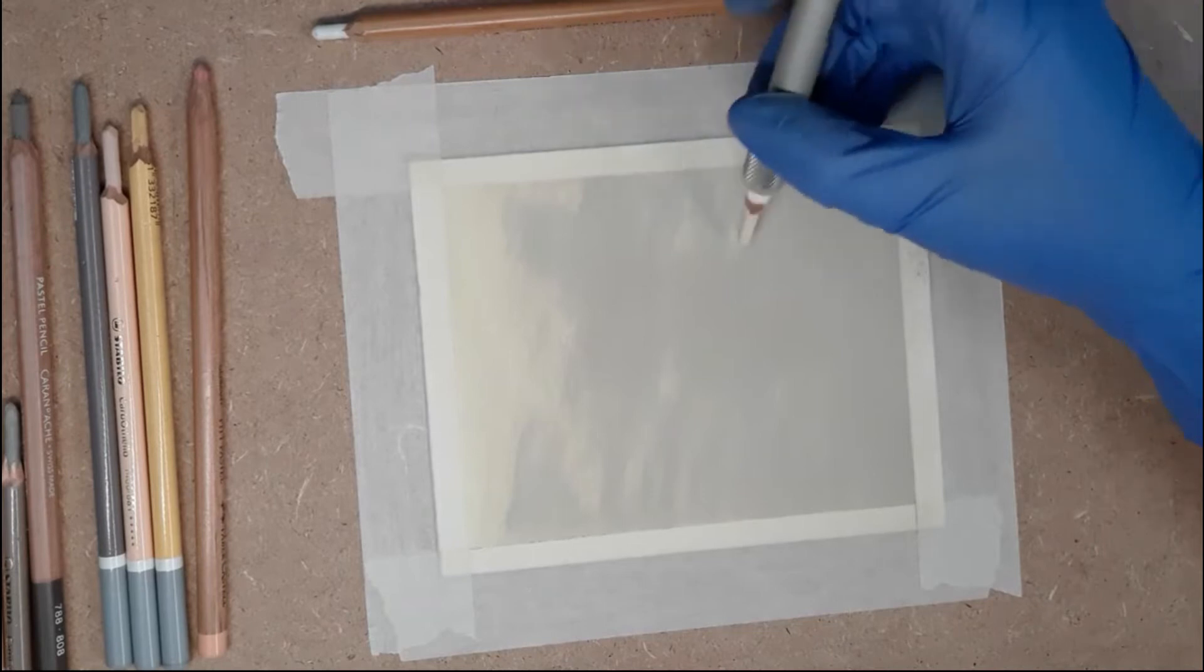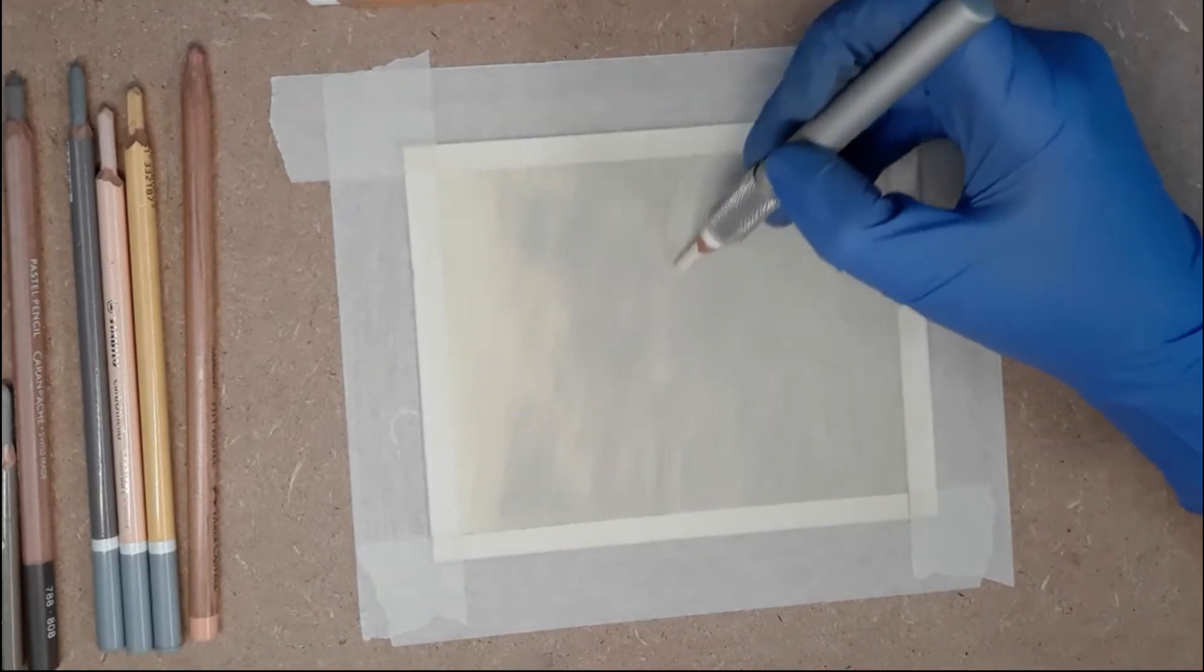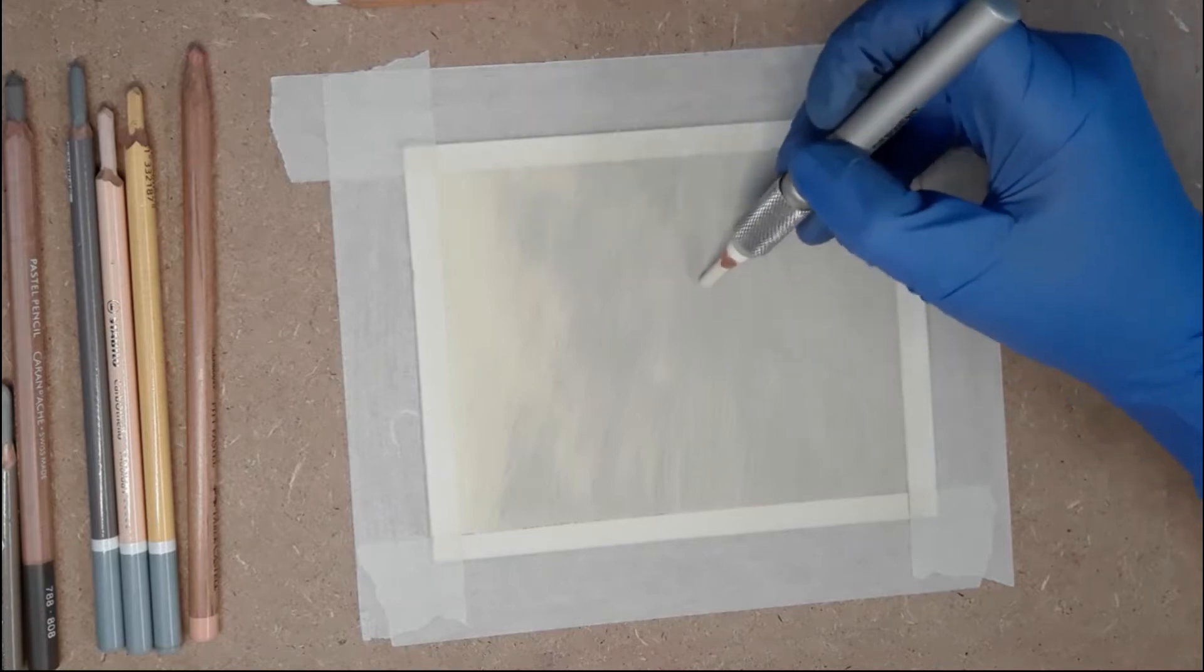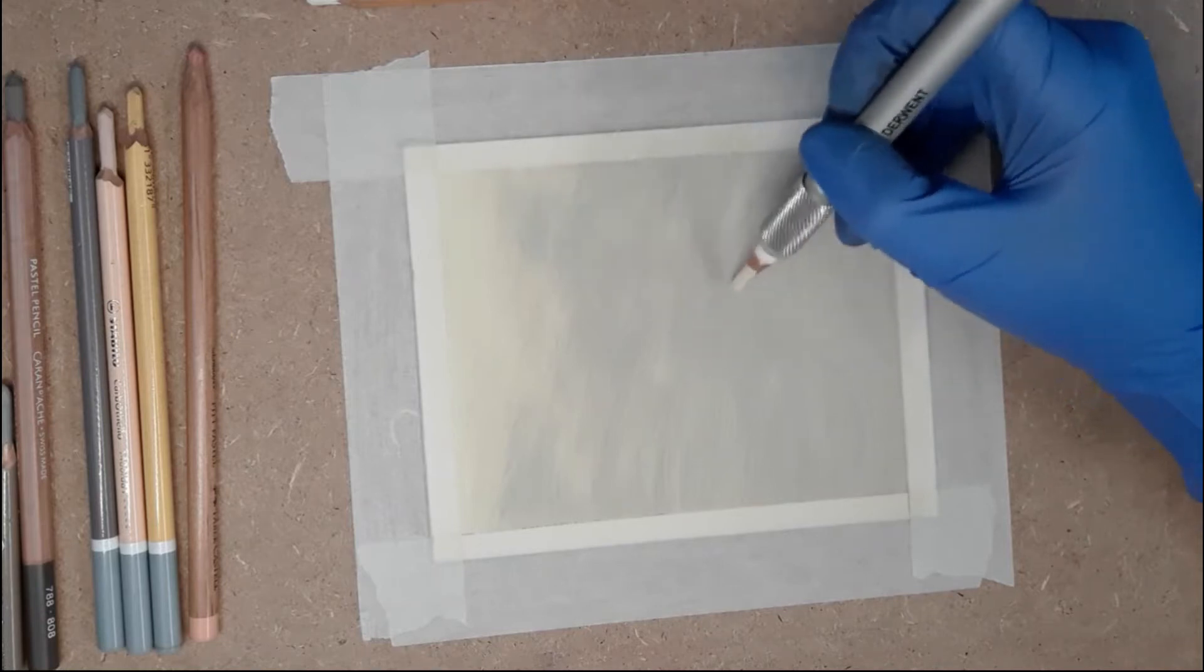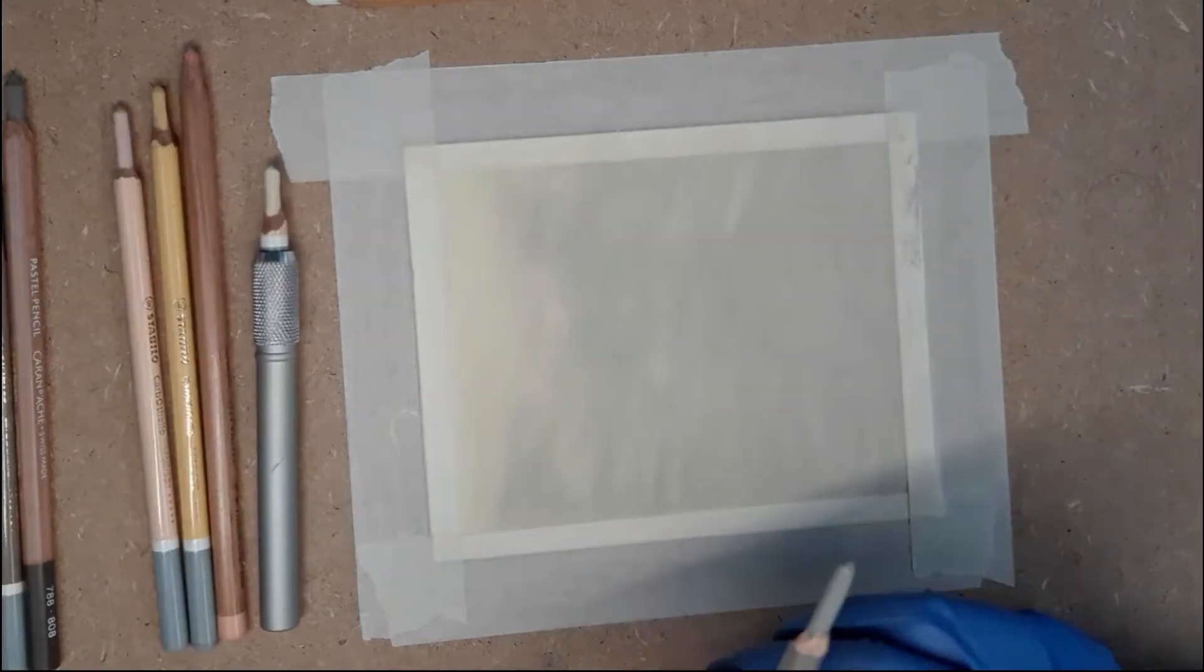Once your under layer is in place, we can start adding some detail. My first layer is with a light creamy color and because it's so light it doesn't show as good in a video as I would have liked. But just keep adding these strokes in the direction of the fur and you will start to see them.